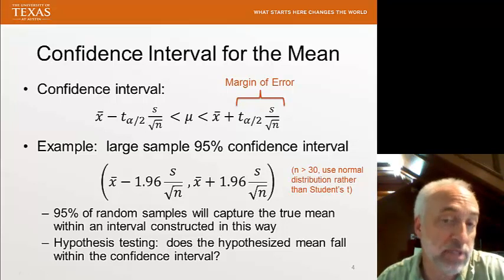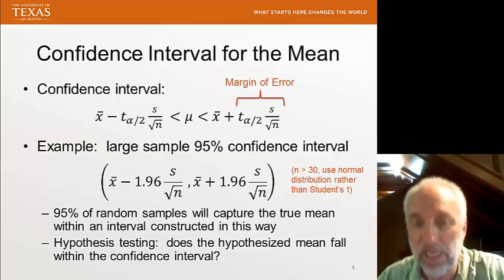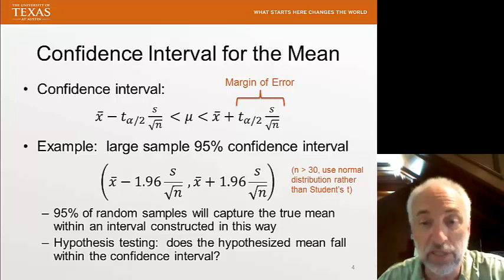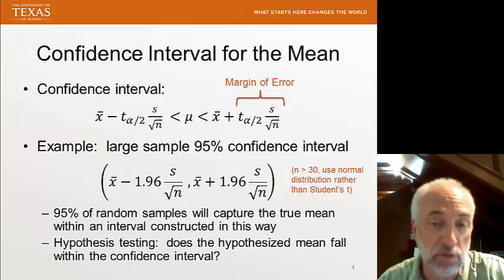What does this confidence interval tell us? It says 95% of any random sample that I might collect is likely to capture the true mean with an interval constructed in this way.